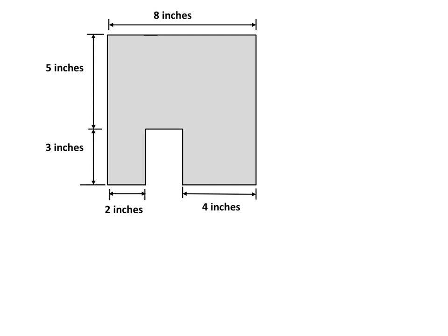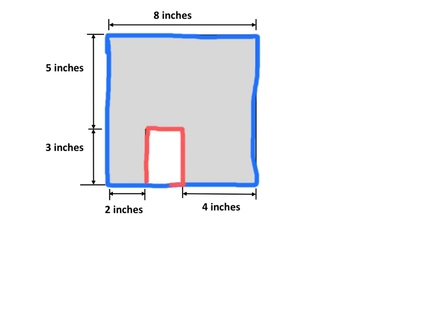On this next problem, they don't tell us whether to use the addition or subtraction method. What I see is that this kind of looks like somebody took a bite out of our shape. Since it looks like a bite was taken out, I'm going to use the subtraction method: I'll pretend the whole rectangle is complete, find its area, and then subtract the area of that little bite.